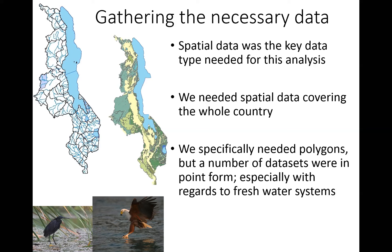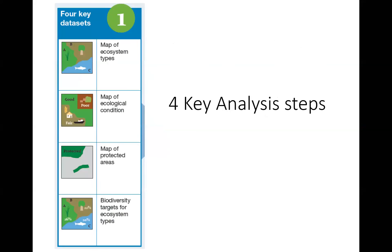To do this work, we needed a lot of spatial data — data covering the whole country in different types, and we needed it to be in polygon format. We quickly found that a lot of datasets were in point form, especially those related to water and freshwater systems. The water department mostly records data at a point rather than making it into informative polygons.